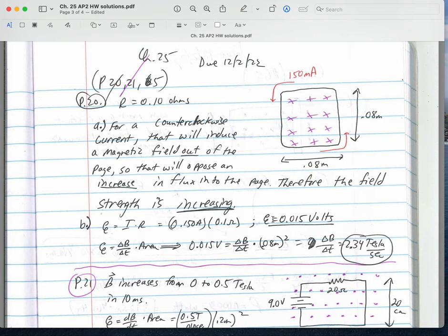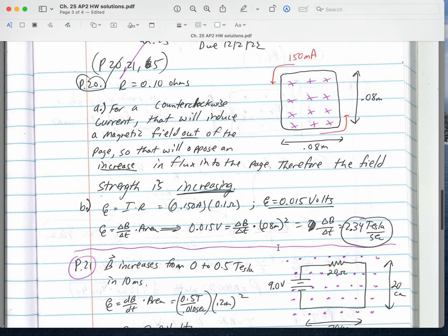To figure out how much, we take the current times the resistance which was given to us. I got 0.015 volts. Well, 0.015 volts is equal to that change in field strength per time multiplied by the area. The area is 0.08 squared, so that's 0.0064, and I've got 2.3 Tesla per second.